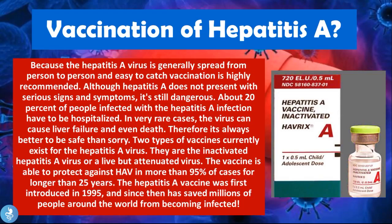Because the Hepatitis A virus is generally spread easily from person to person, vaccination is highly recommended. Although Hepatitis A does not always present with serious signs and symptoms, it is still dangerous — about 20% of people infected have to be hospitalized, and in very rare cases the virus can cause liver failure and even death. Two types of vaccines currently exist: inactivated Hepatitis A and live but attenuated Hepatitis A. The vaccines protect against the virus in more than 95% of cases for longer than 25 years. The Hepatitis A vaccine was first introduced in 1995 and has since saved millions of people worldwide. The key takeaway is to get your vaccinations and keep them up to date.